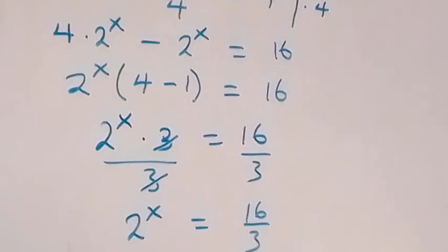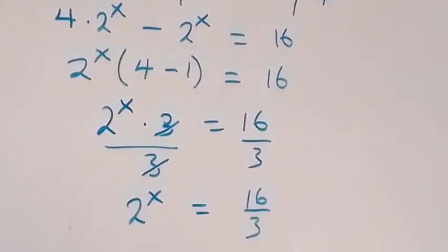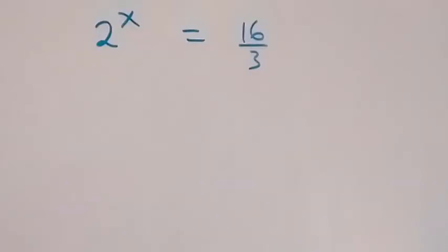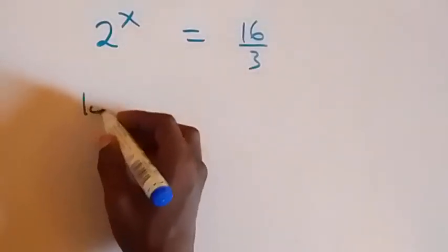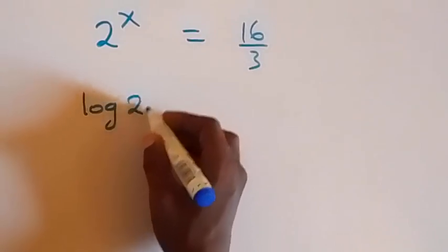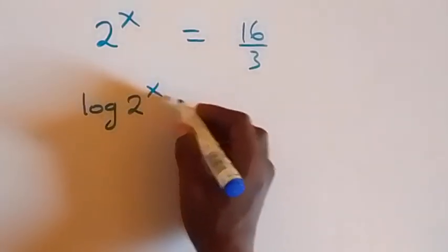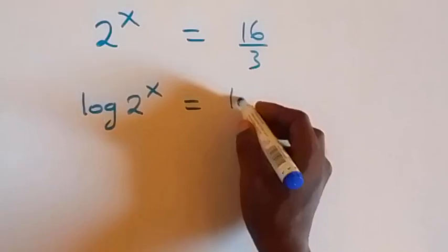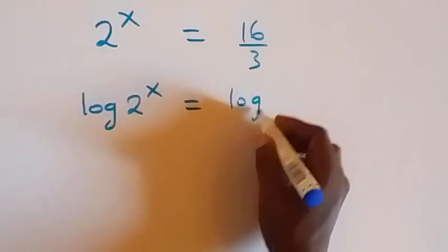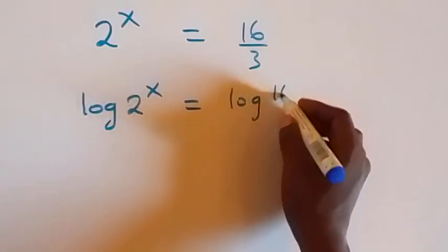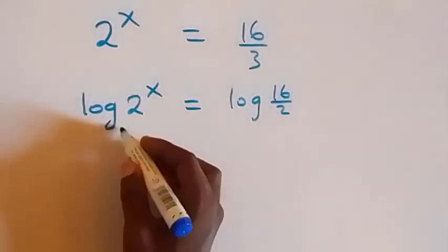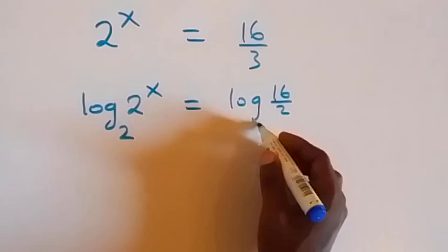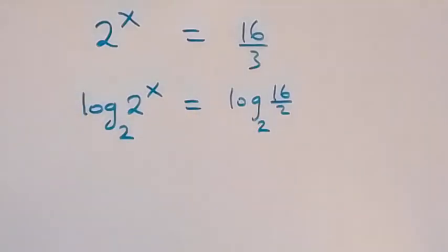From here, let's take the log on both sides. We have log of 2 raised to power x equals to log of 16 over 3. And let's take the log to base 2 on both sides.